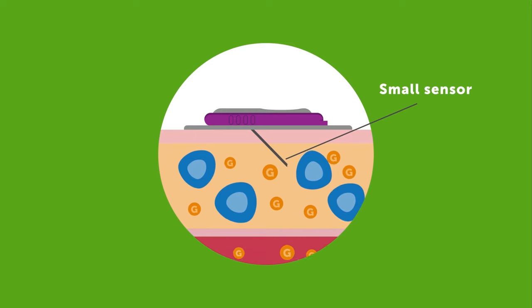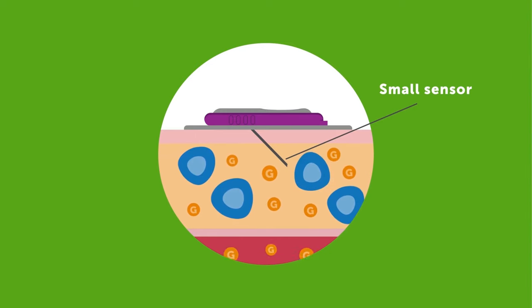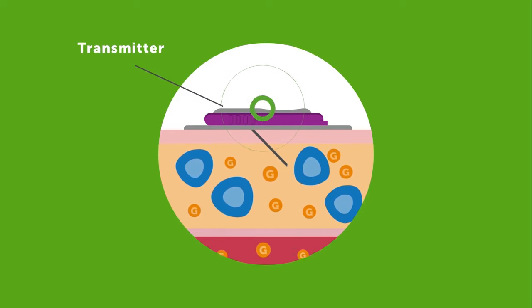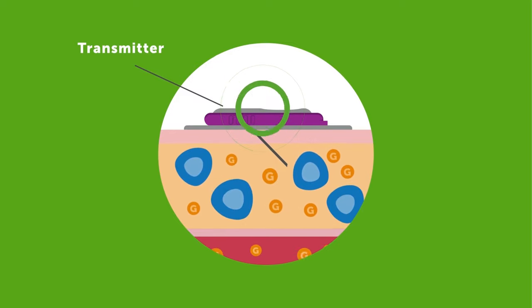1. A small sensor that measures glucose levels just underneath the skin. 2. A transmitter that fits onto the sensor and sends data wirelessly to the receiver or compatible smart device. 3.